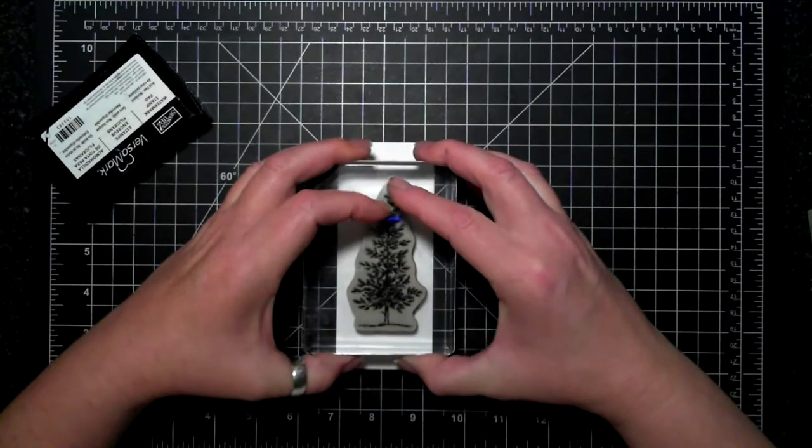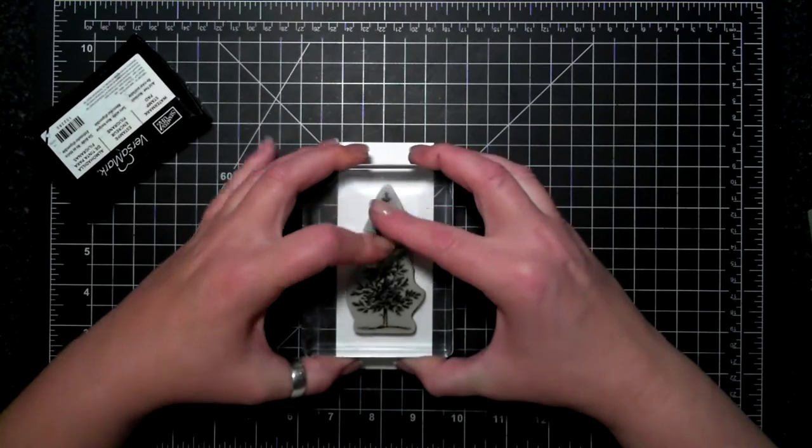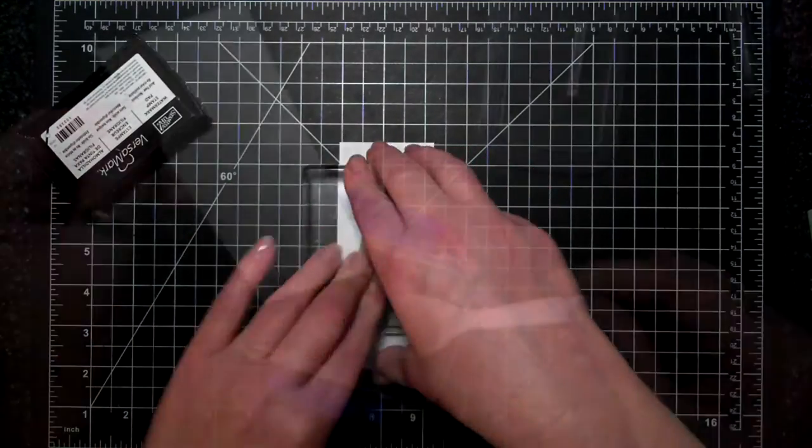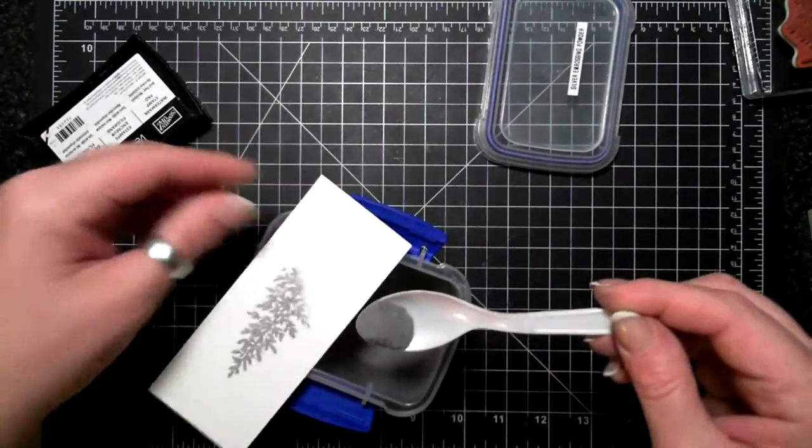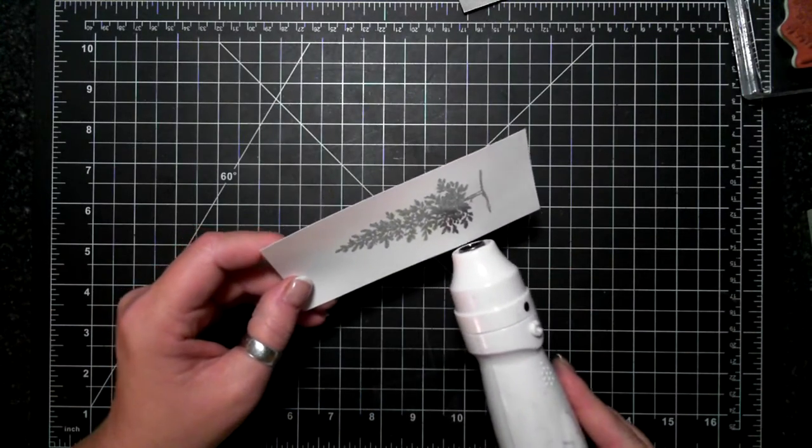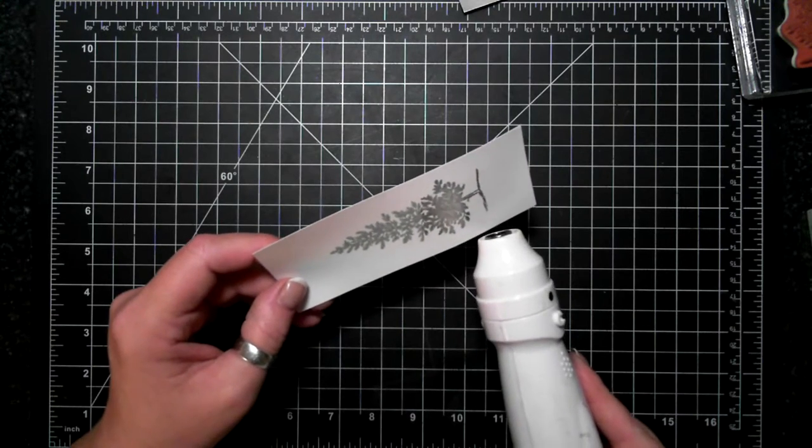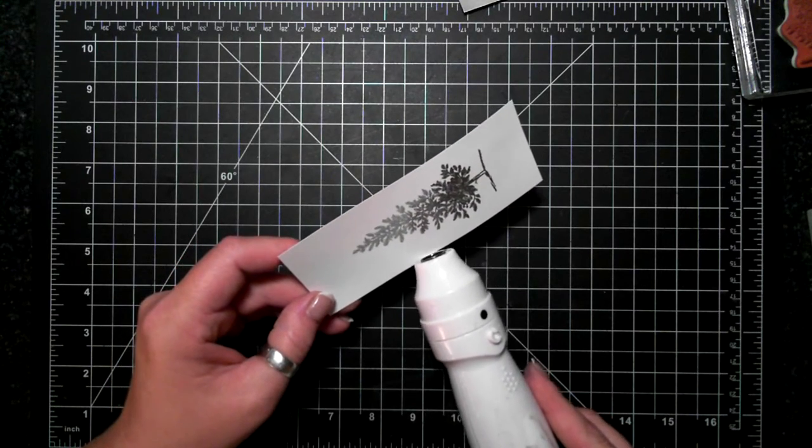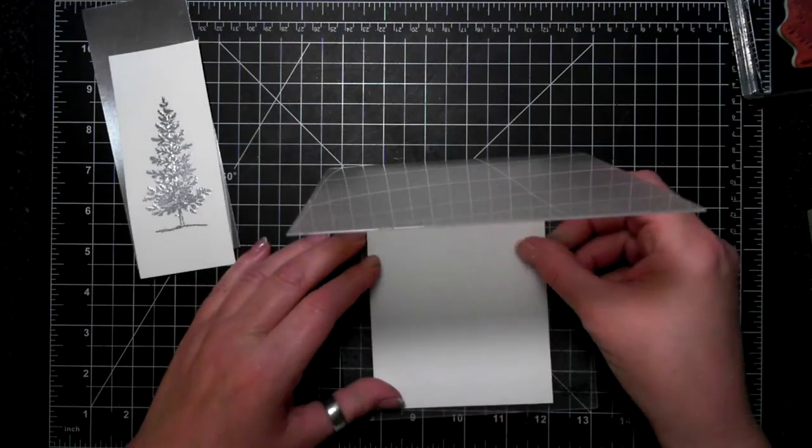I have a piece of Whisper White here that I've treated with my embossing buddy, and I'm stamping with Versamark this lovely coniferous tree. I'm sprinkling that with silver embossing powder and heating it up to create a shiny, beautiful silvery tree.